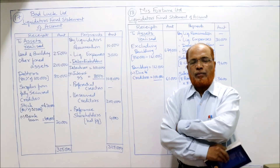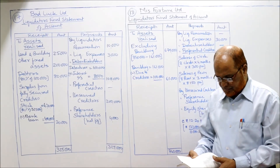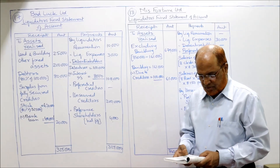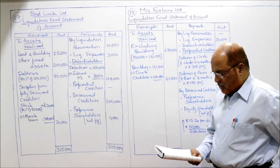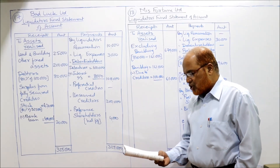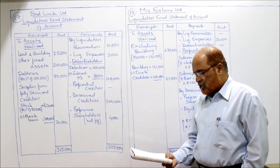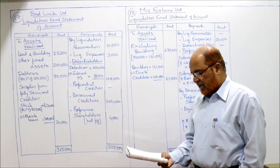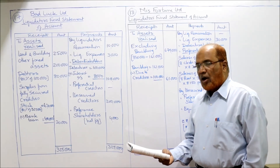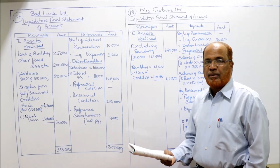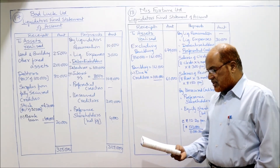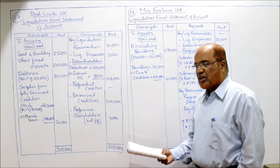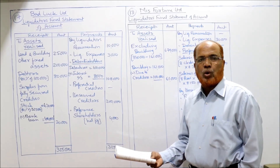Now see problem number 17. The balance sheet of Bad Luck Limited as on 31st December 2001 was as follows: 8,000 preference shares of rupees 10 each — 80,000; 12,000 equity shares of rupees 10 each — 1,20,000; bank loan 4,00,000; 8% debentures 1,00,000; interest due on debentures 8,000 — meaning debenture interest outstanding must be paid. Then creditors (assumed unsecured), land and building, other fixed assets, stock, debtors.